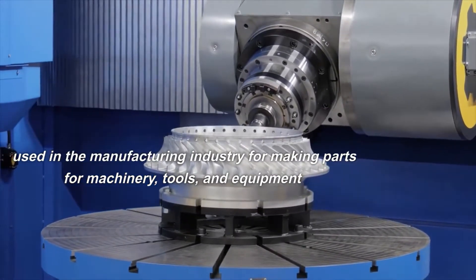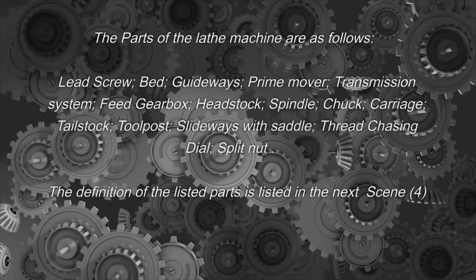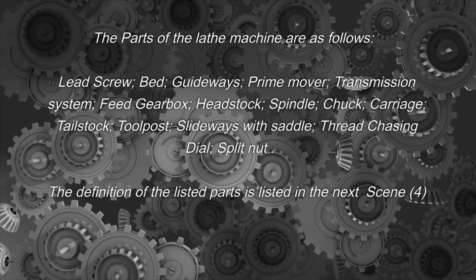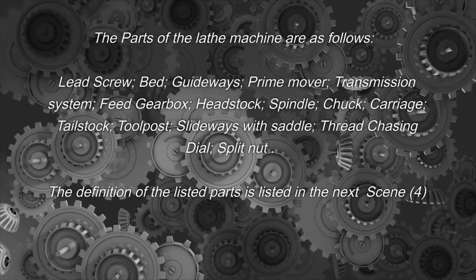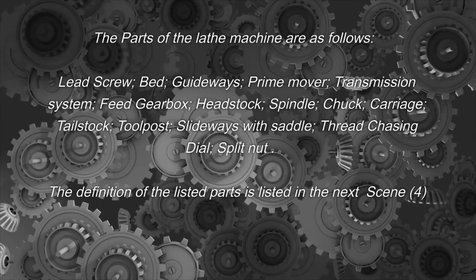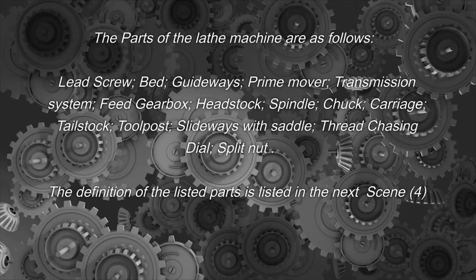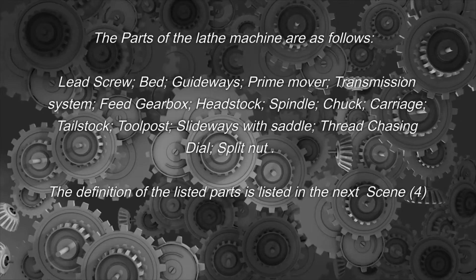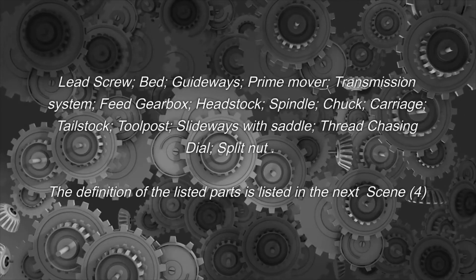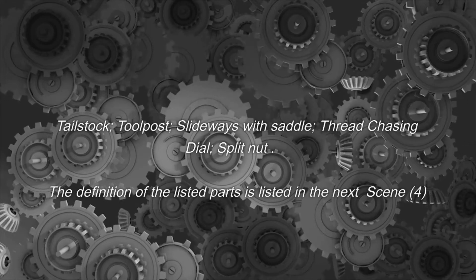The parts of the lathe machine are as follows: lead screw, bed, guideways, prime mover, transmission system, feed gearbox, headstock, spindle, chuck, carriage, tailstock, tool post, slideways with saddle, thread chasing dial, and split nut.